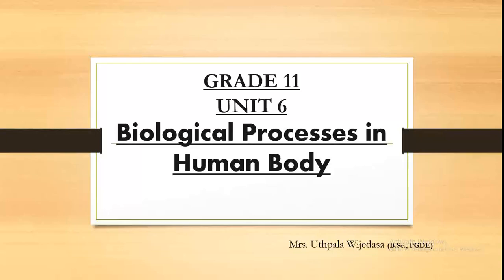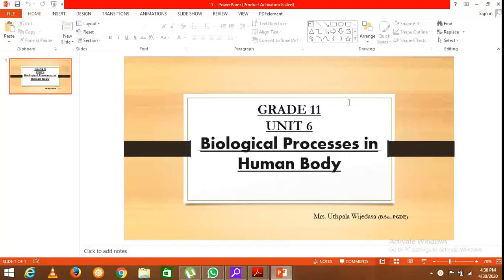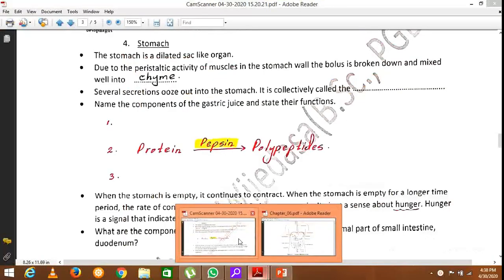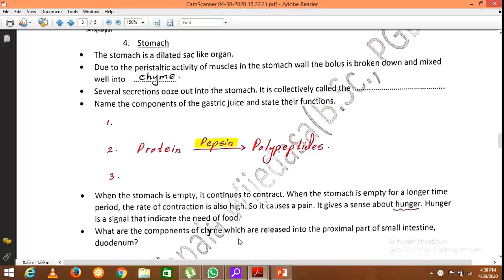We were discussing about the digestive system, covering the buccal cavity, pharynx, and esophagus. Now we'll continue from the stomach. The stomach is a dilated, sac-like organ. Due to the contractions and relaxations of the stomach wall, the bolus is broken down and mixed, and the resultant is known as chyme.